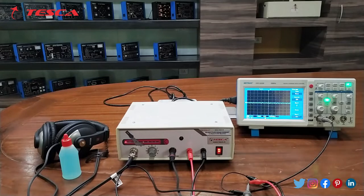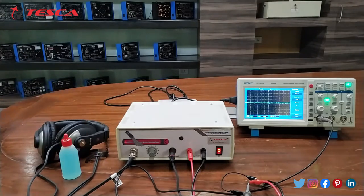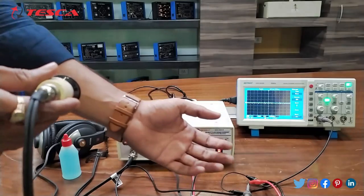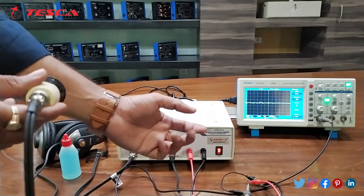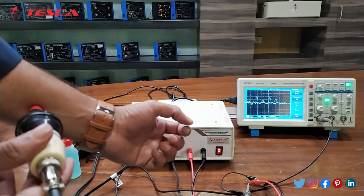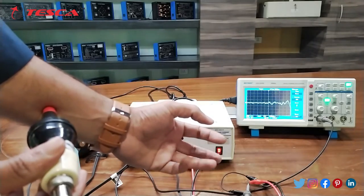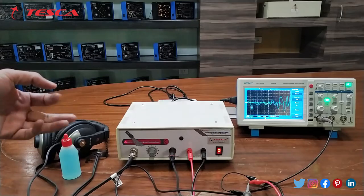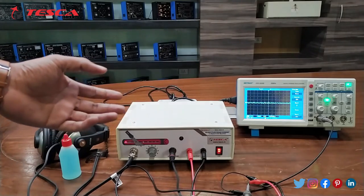If you want to get better signal at the output on the DSO then you should keep the audio at around 7 or 8 and put the transducer on your hand like this and move like this. Here you can see that on the DSO the signals are better and you can hear the audio on the headphone also. That is how you can get better waveforms on the DSO.